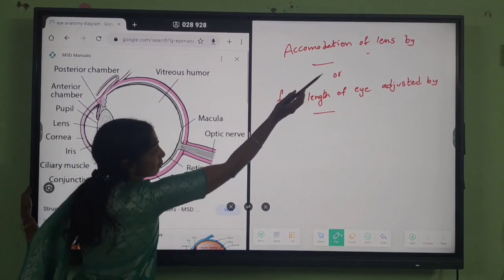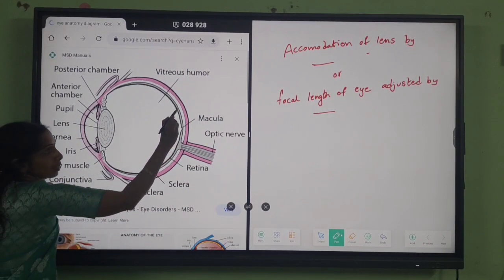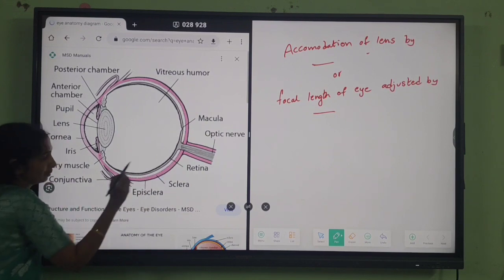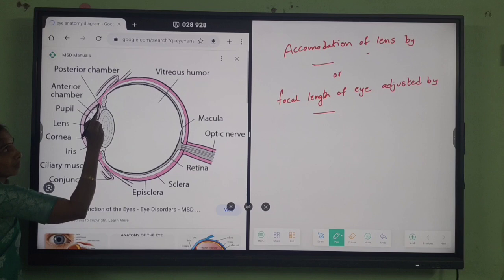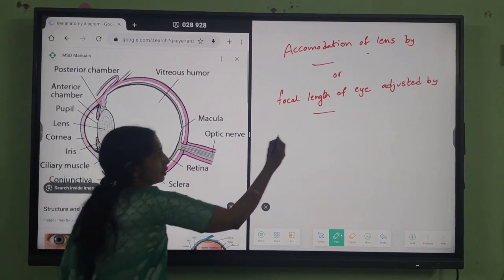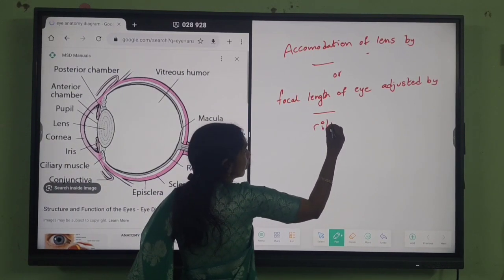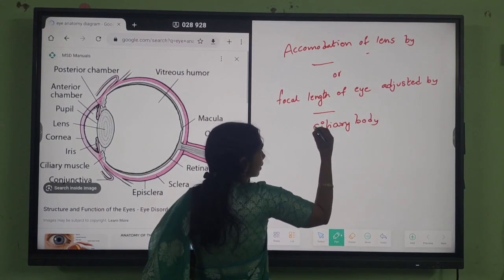What is accommodation of lens? The choroid layer posterior portion is thin and it turns as a thick anterior portion. You can see here this area. This anterior portion is called ciliary body which is thick.